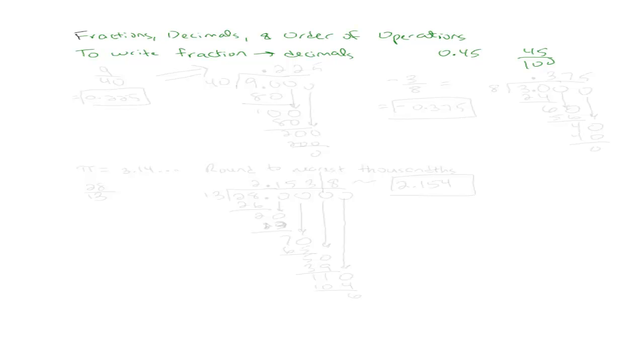Okay, if I want to convert from a fraction to a decimal instead, say I have 9 over 40 and I want to convert this to a decimal, I'm gonna write it in long division, 9 divided by 40. Does 40 go into 9? It does not. So what do I do if I need to divide a number that doesn't go into another number? Add a decimal point and zeros, right?